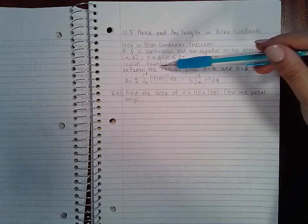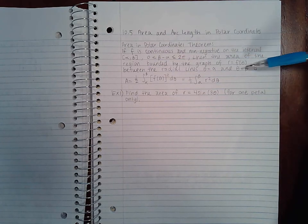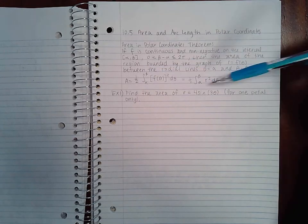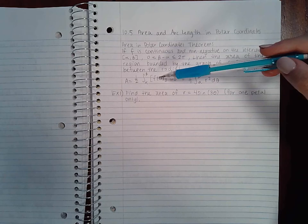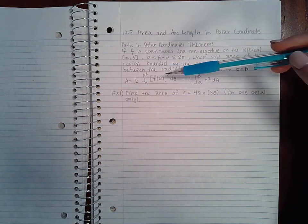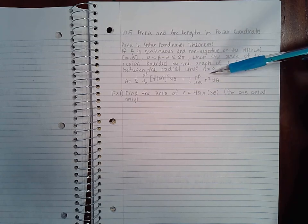between the radial lines θ = α and θ = β is given by this formula: one half the integral of f(θ) squared between α and β dθ, or one half r squared dθ.